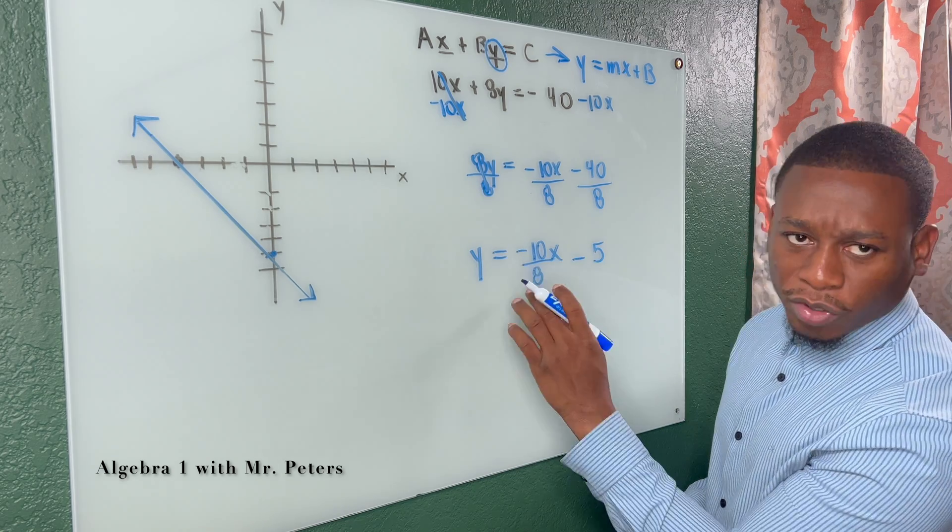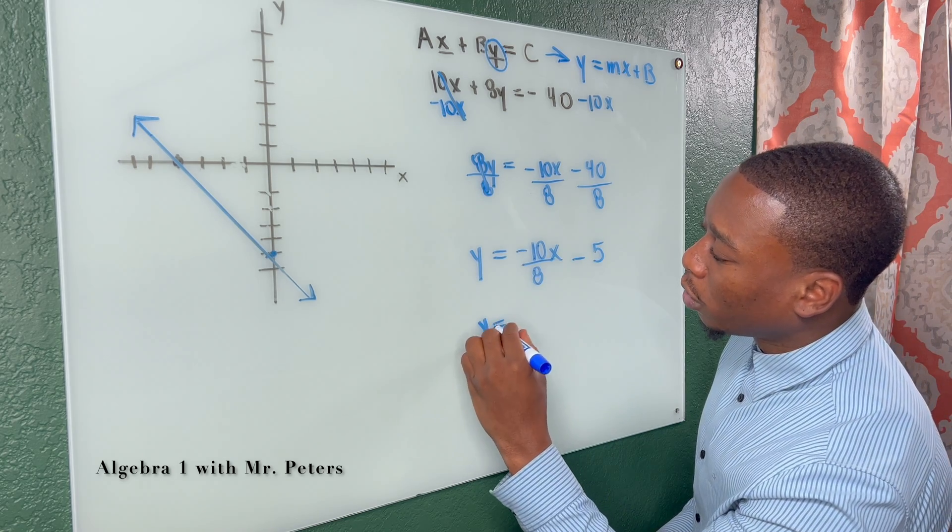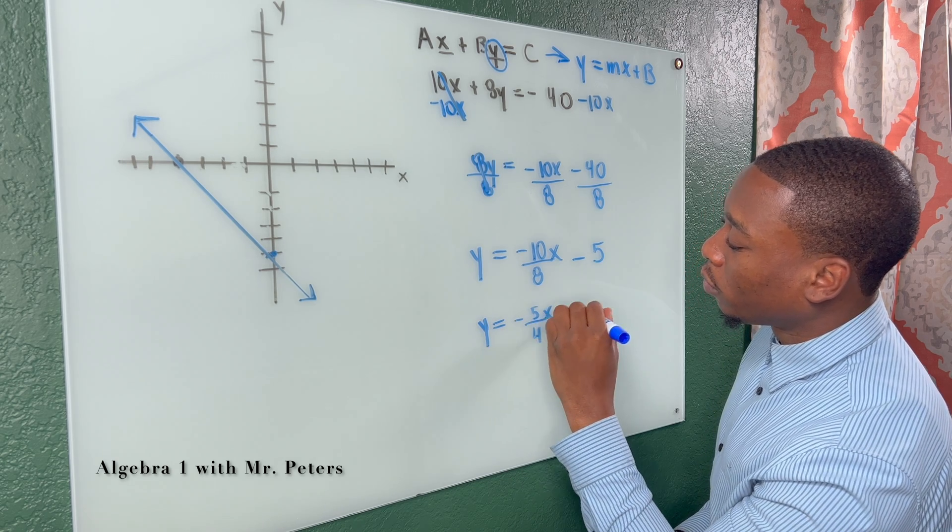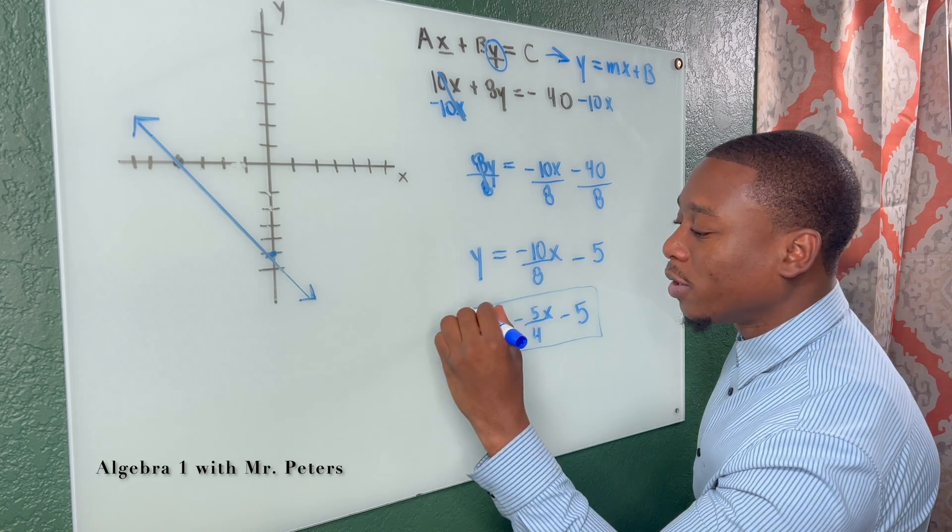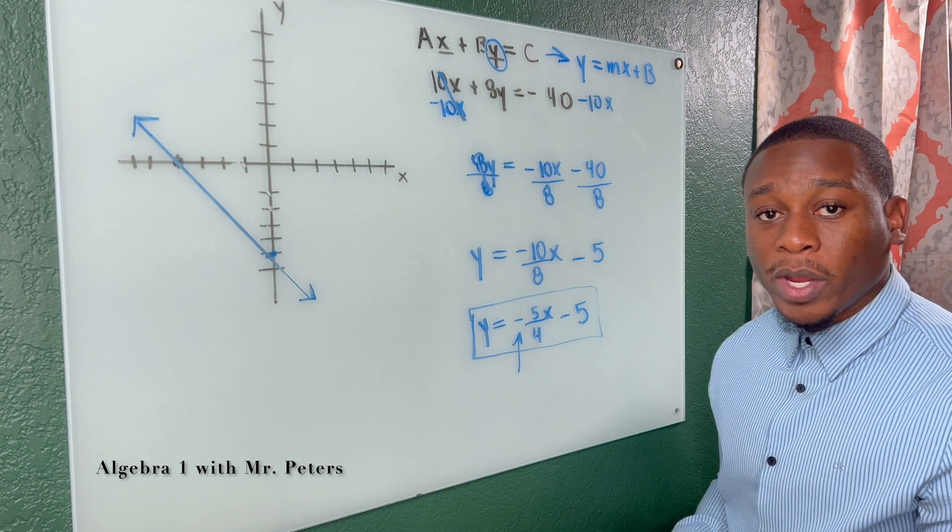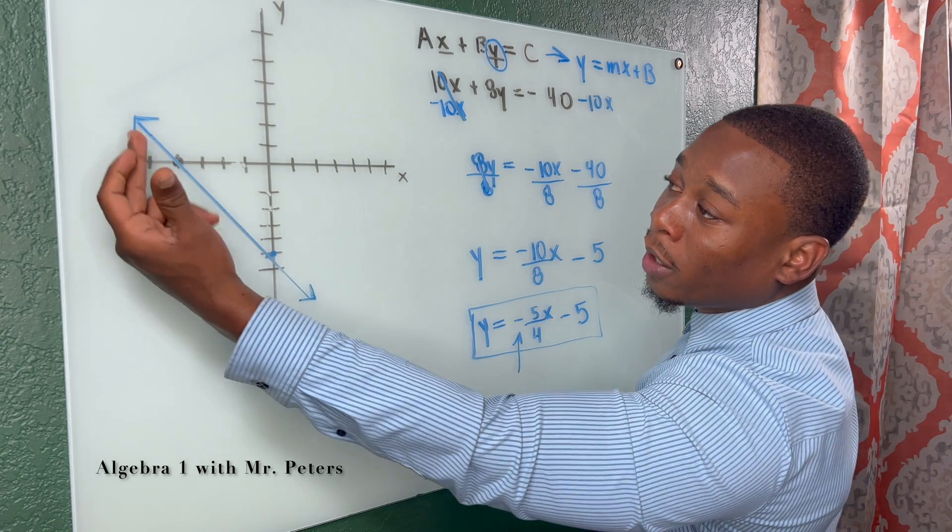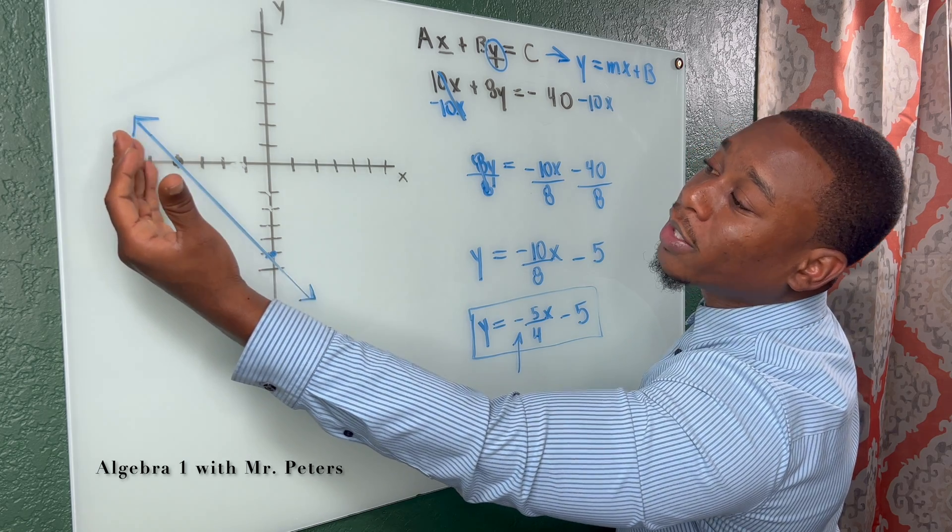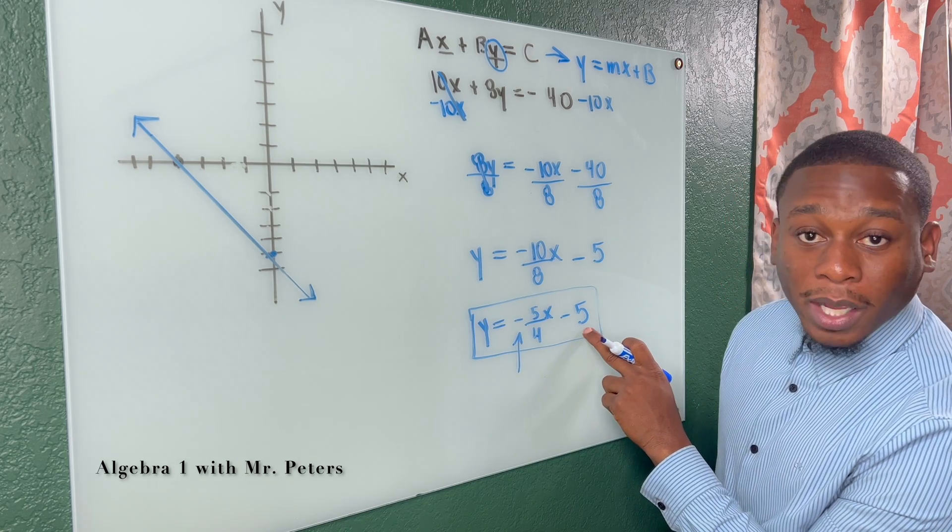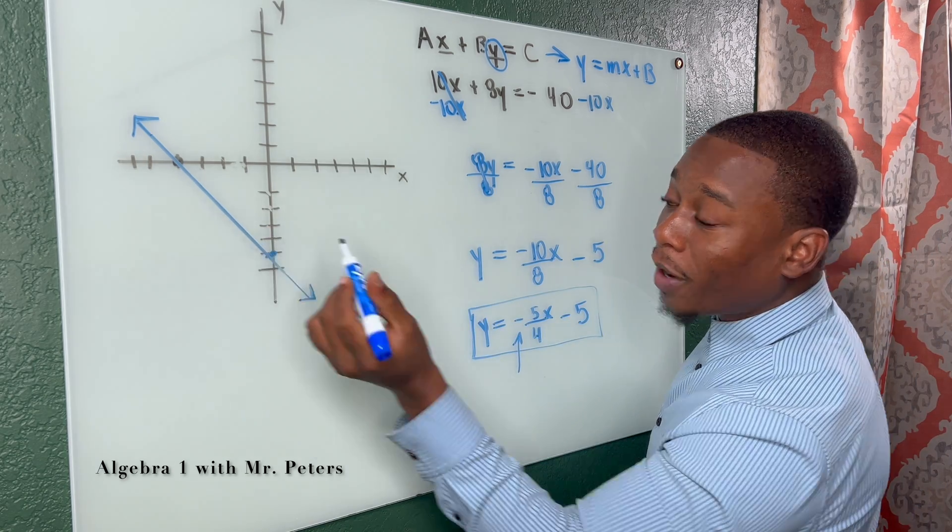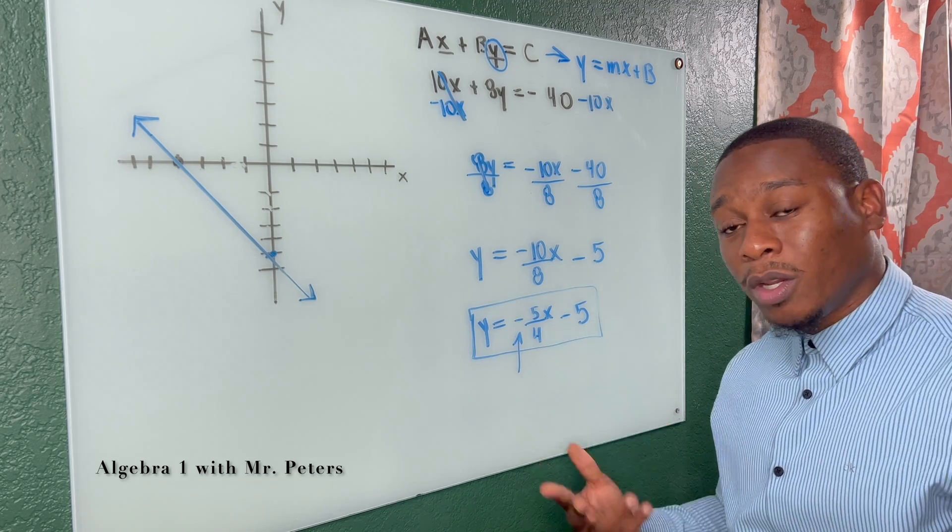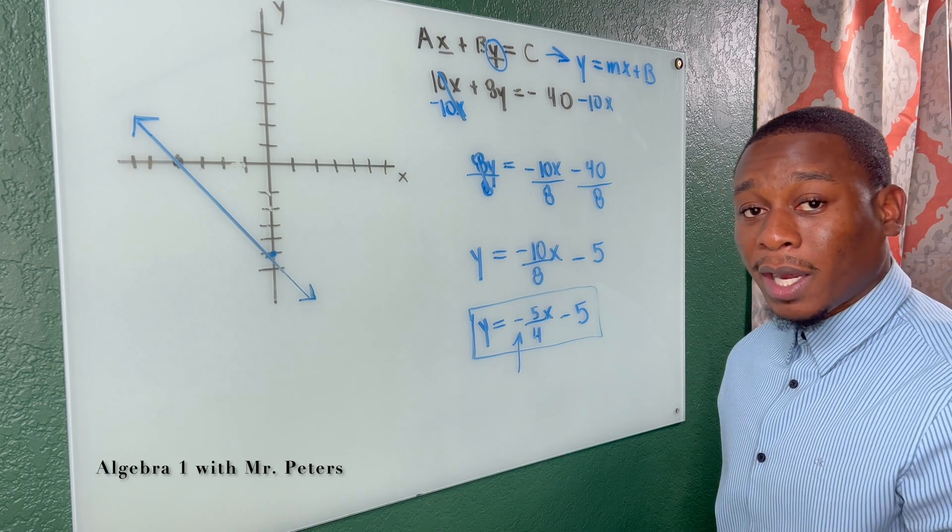And now what we get is Y is equal to negative 10 over 8X minus 5. And this is important. Let's just reduce this fraction real quick. So when we look at this equation, this is important because one, this negative sign lets us know we have a negative slope. And when we look at this line, it's oriented like we're going down some stairs. So we're correct. When we look at the Y intercept, it's negative 5, 1, 2, 3, 4, 5.